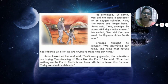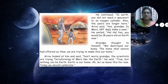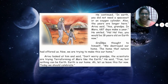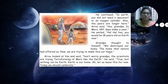'Also the years are longer here.' Arumadhi said, 'Yes, Grandpa — on Mars, 687 days make a year, but on Earth, 365 days make a year.' He smiled. 'Aha, yes — you would be 18 years old on Earth.' Grandpa thought to himself, 'We destroyed our home, the home that nature had offered us.'